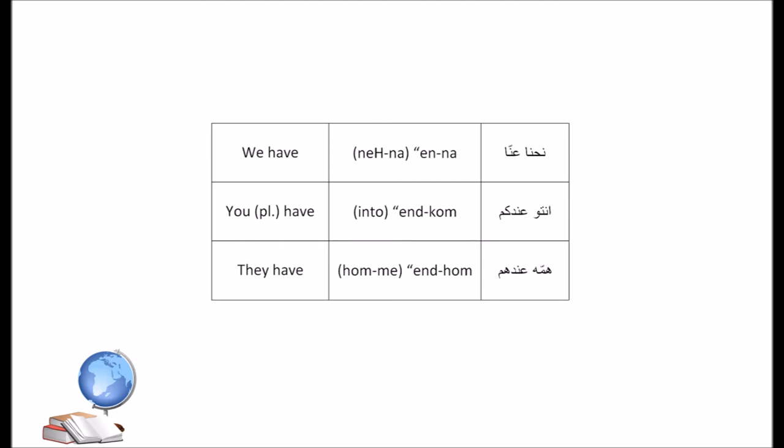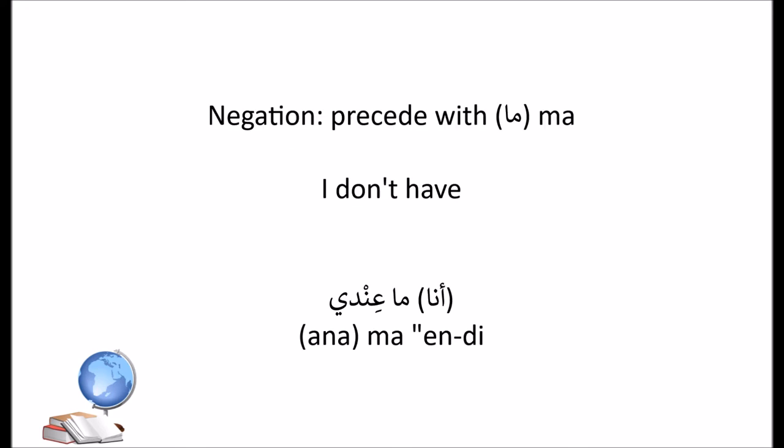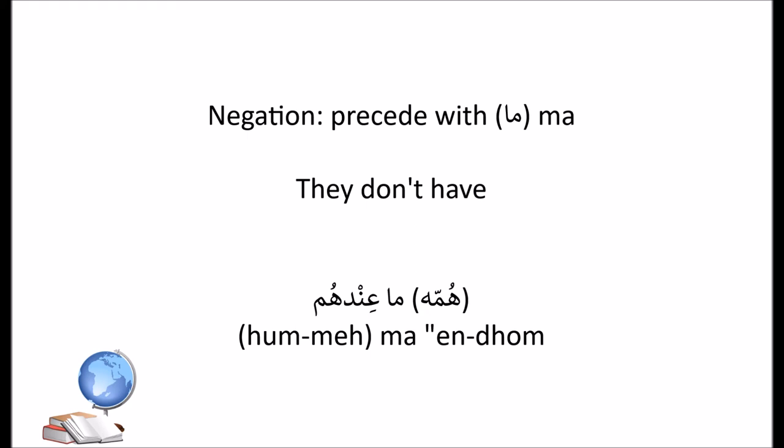If you'd like to know more on subject pronouns, there is a separate video up on that topic. If you want to negate 'to have', you precede it with ما. So to say 'I don't have' — ما عندي. They don't have — ما عندهم.